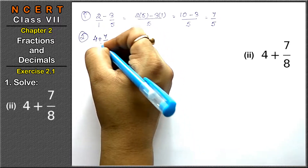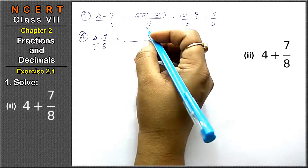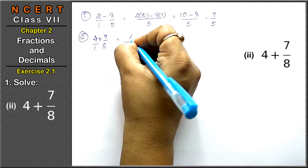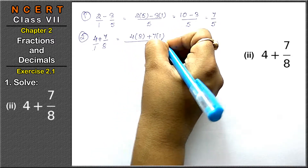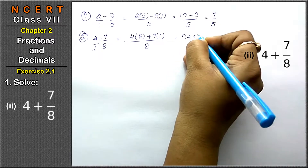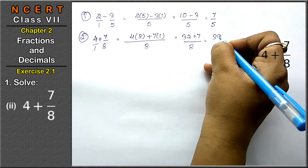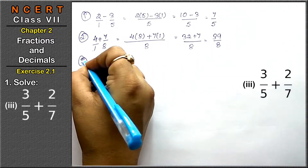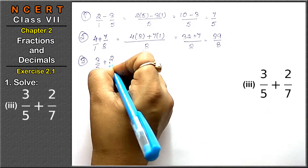Write 4 as 4 upon 1. 8 is the LCM. Multiply accordingly: 4 into 8 plus 7 into 1, that is 32 plus 7 upon 8. The answer is 39 upon 8. Now the third part: 3 upon 5 plus 2 upon 7.